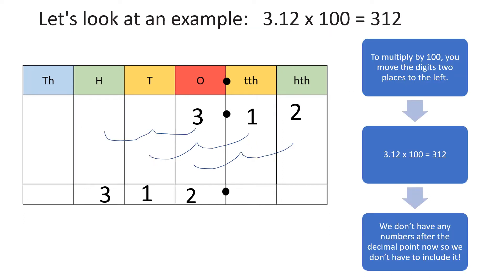When we are multiplying by 100, we will move two places on the place value chart. Here we have 3.12. Because we are multiplying by 100, we move each digit two places. 3 times 100 becomes 300. The 1 tenth moved two places becomes 1 ten. And 2 hundredths moved two places becomes 2 units. So 3.12 times 100 becomes 312. Again, we don't have anything after the decimal, so we do not need to include it in the answer.